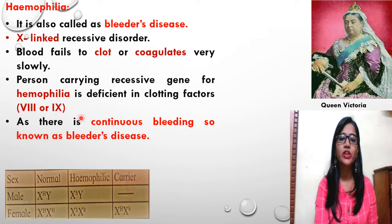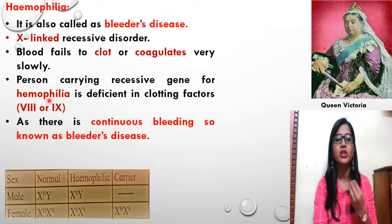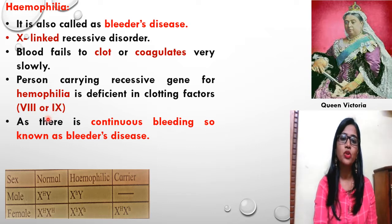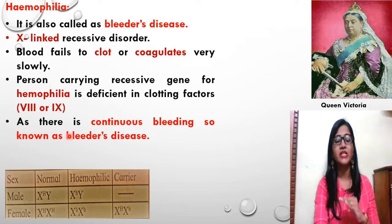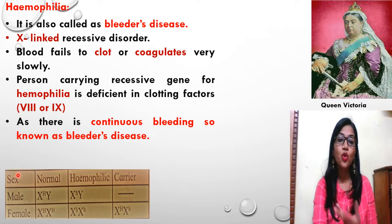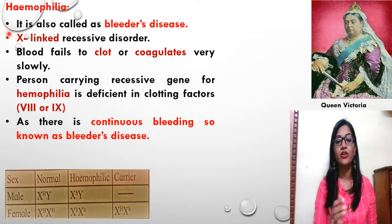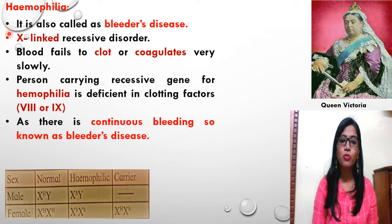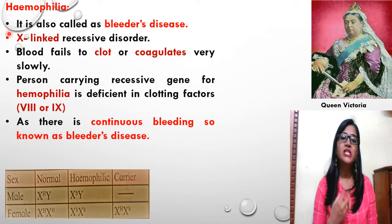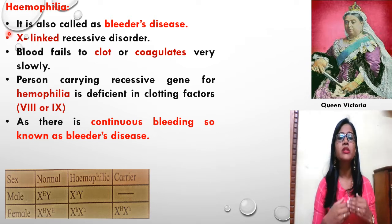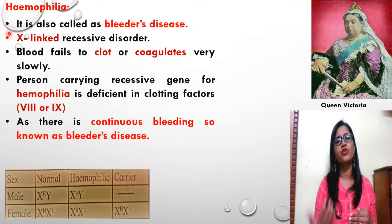The recessive gene for Haemophilia is located on the non-homologous region of the X chromosome. As there is no corresponding allele on the Y chromosome to suppress its expression, men suffer from this disease. Women suffer only when both X chromosomes carry recessive alleles.